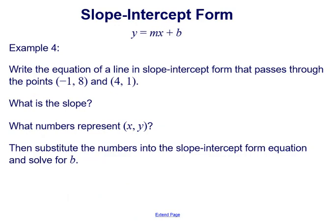Let's do this type of problem one more time where we're given two points and have to write the equation of the line in slope-intercept form. The two points given are (negative 1, 8) and (4, 1). The first thing to do is find the slope using the slope formula, then substitute values into the slope-intercept form equation to solve for b.